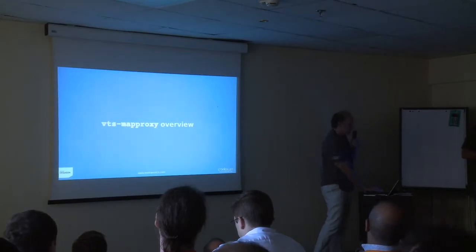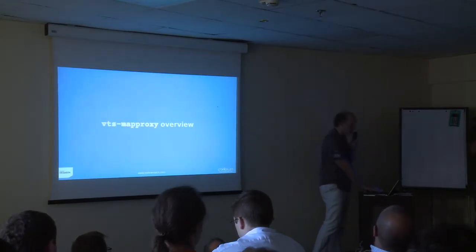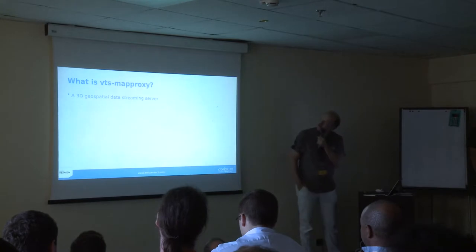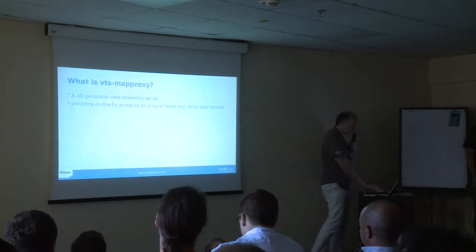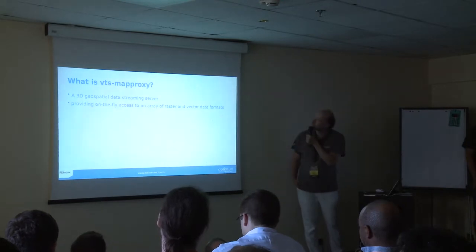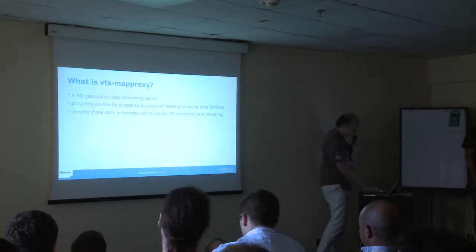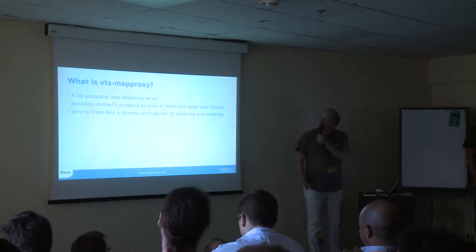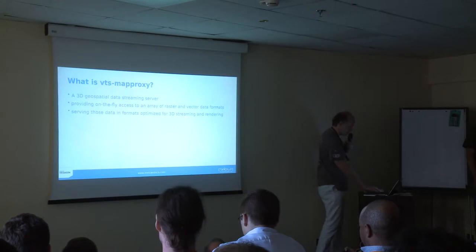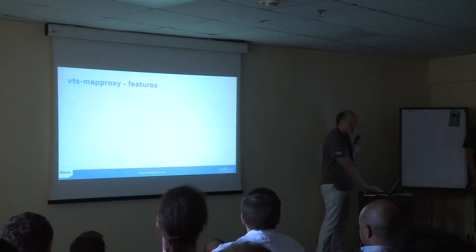VTS MapProxy is a 3D geospatial streaming server that provides on-the-fly access to an array of raster and vector data formats, serving those data in formats optimized for 3D streaming and rendering. That pretty much sums it up.